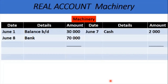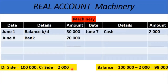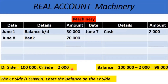First, we have a real account — machinery — and we're going to learn how to balance it. The first thing you will do is add up both sides and calculate the balance. In this account, the debit side equals 100,000 and the credit side equals 2,000. The balance is 98,000. We take the balance and enter it on the lower side, which is the credit side.